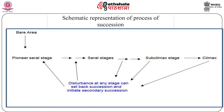This slide shows the schematic representation of the process of succession. We can see that from a bare area, the community changes into a pioneer serial stage, then the serial stage, then the subclimax stage, and finally the climax stage. Disturbance at any stage can set back succession and initiate secondary succession.